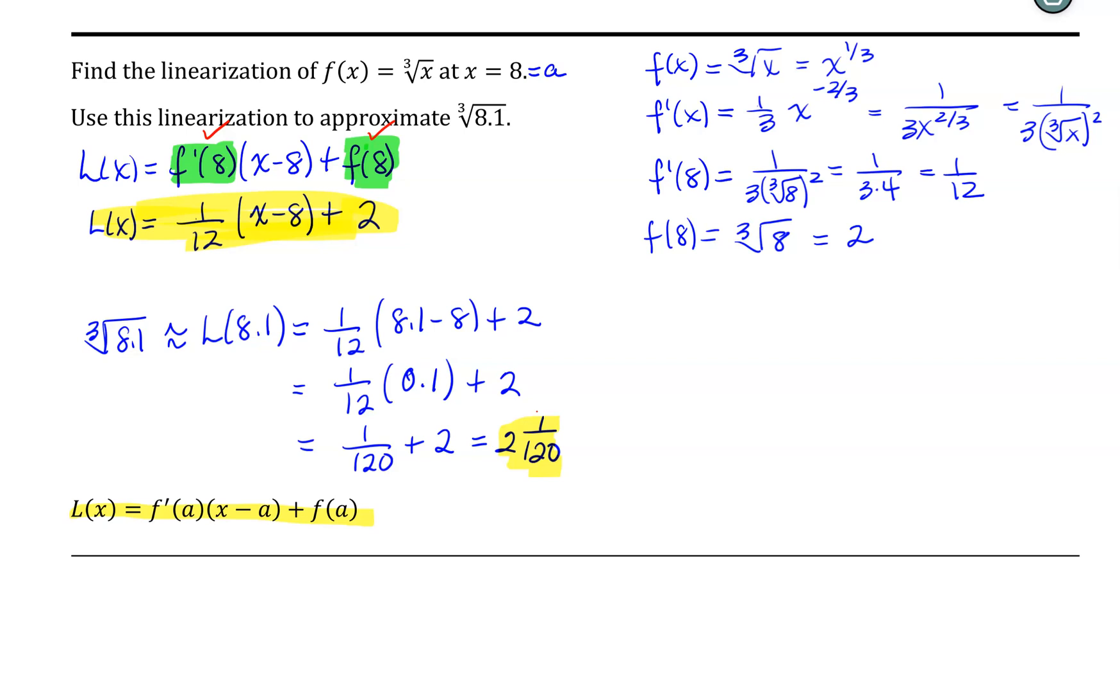Now let's take a quick moment and compare how accurate our linearization is. So using a calculator, I can find that the cube root of 8.1 is approximately 2.00830, at least to 5 decimal places.